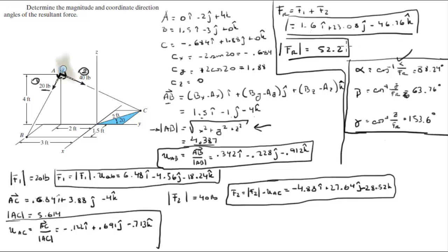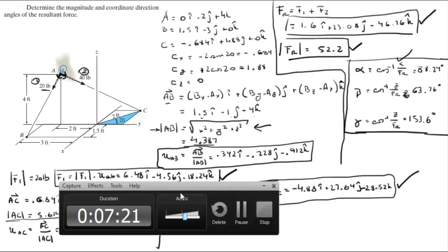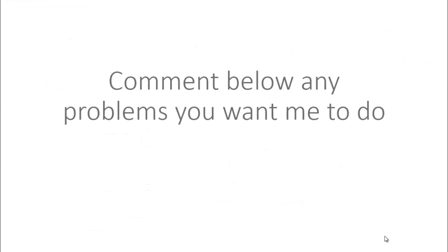So final answer for the magnitude of the resultant force, Cartesian vector form of the resultant force, Cartesian vector form of F2, Cartesian vector form of F1. Please comment below if you want me to do any problems and I'll be happy to help. Thank you.